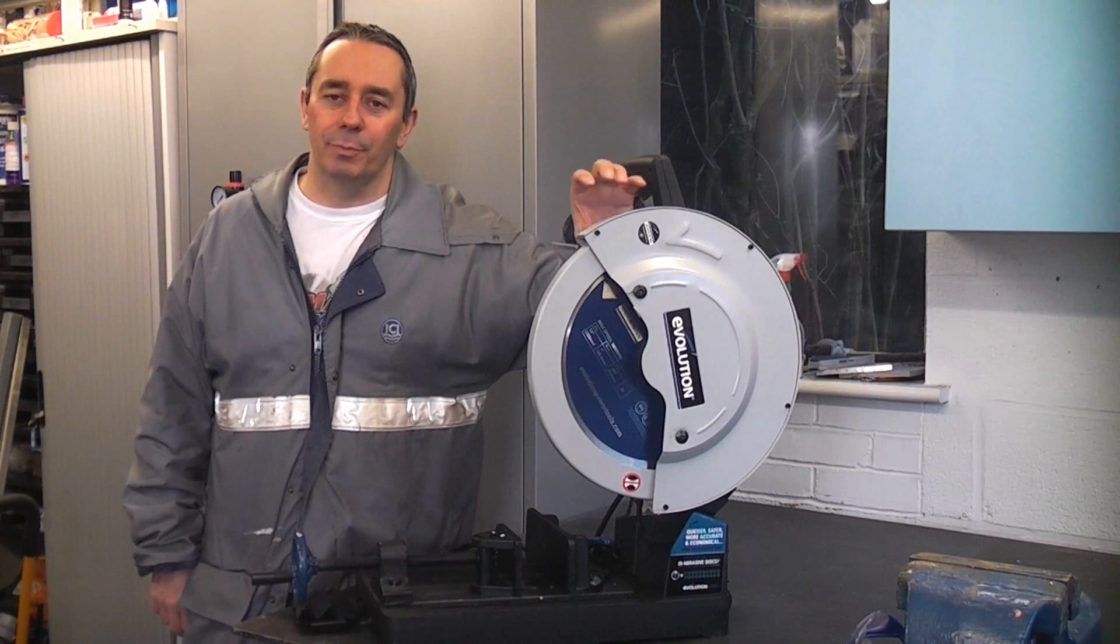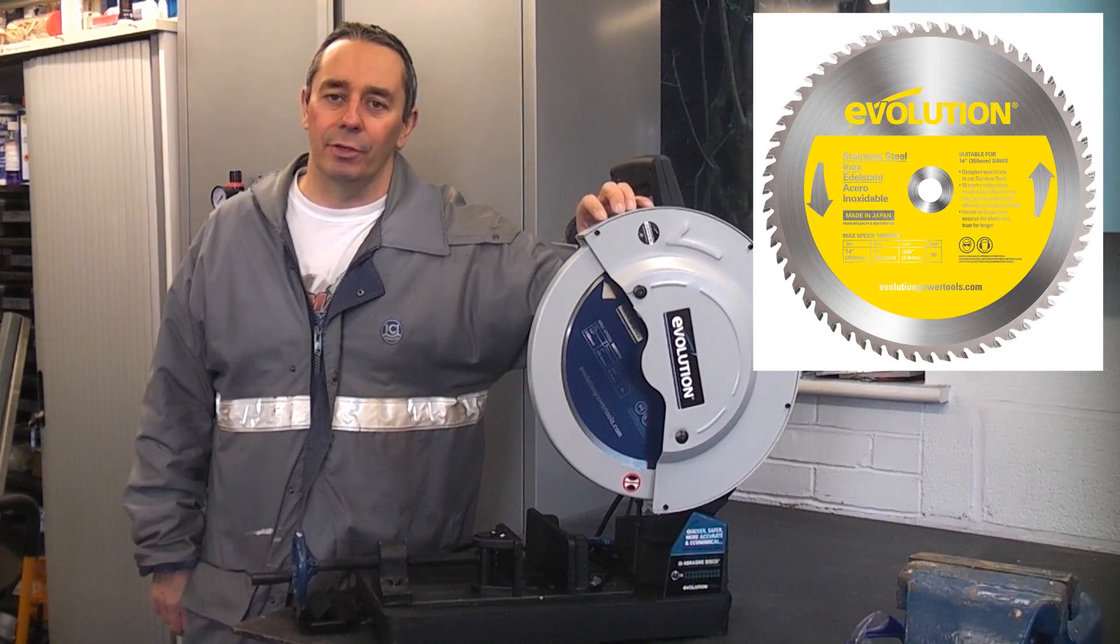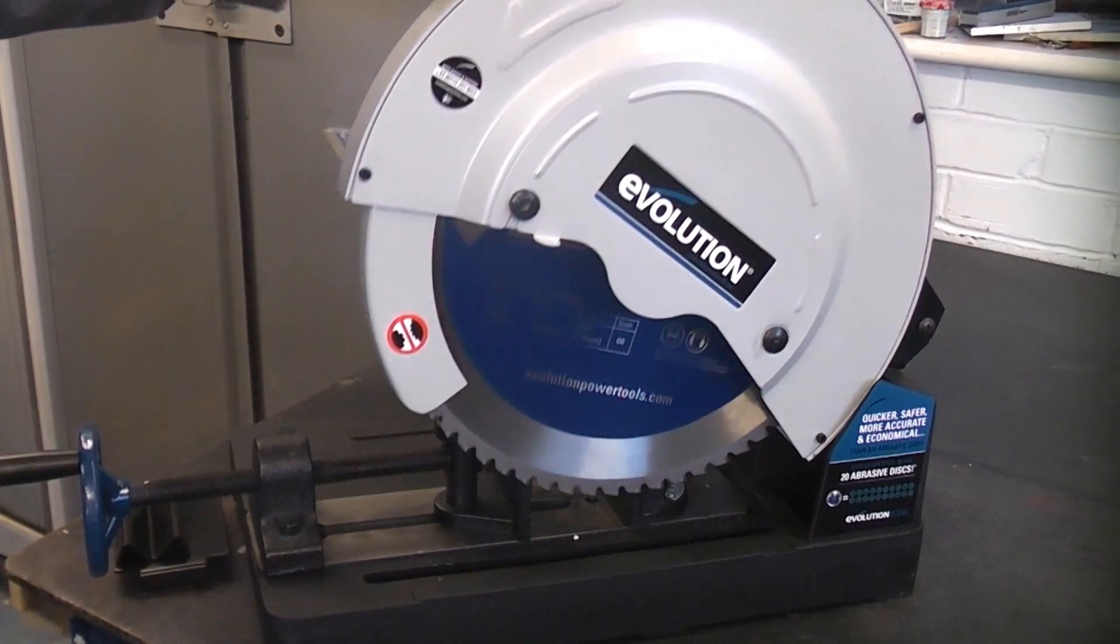You can also get a special blade for this machine if you're cutting a lot of aluminium and you can also get another blade for cutting stainless steel. I've just unplugged the machine whilst we have a quick look at some of the features.